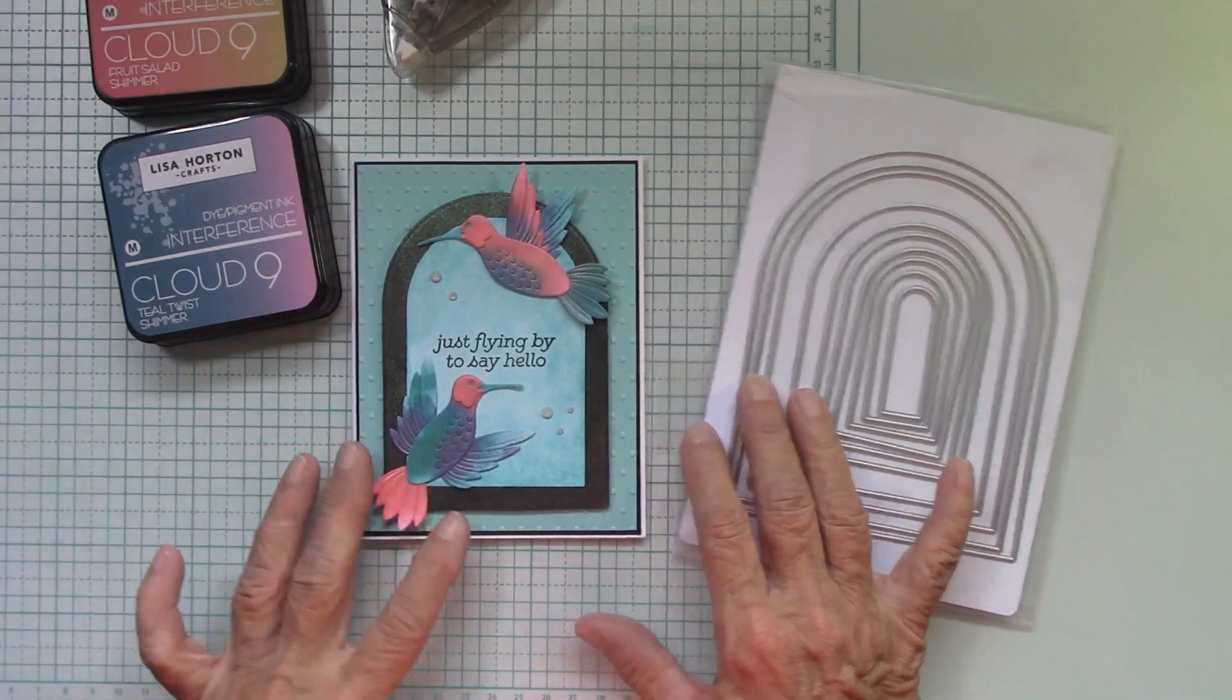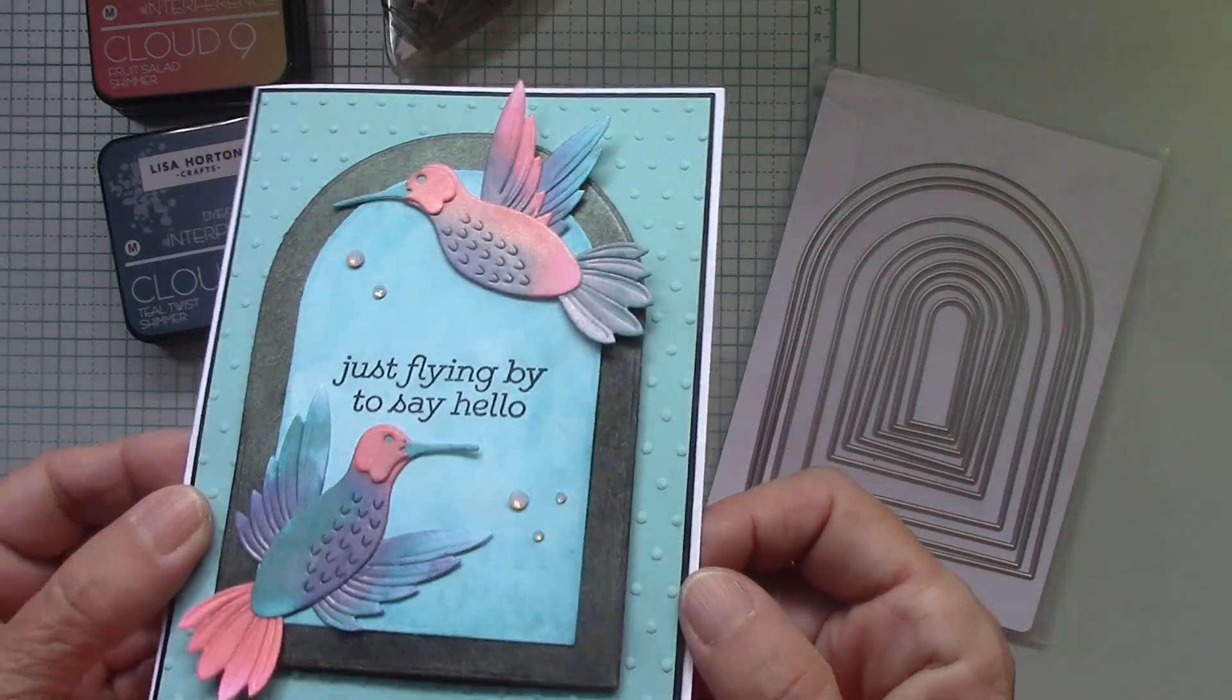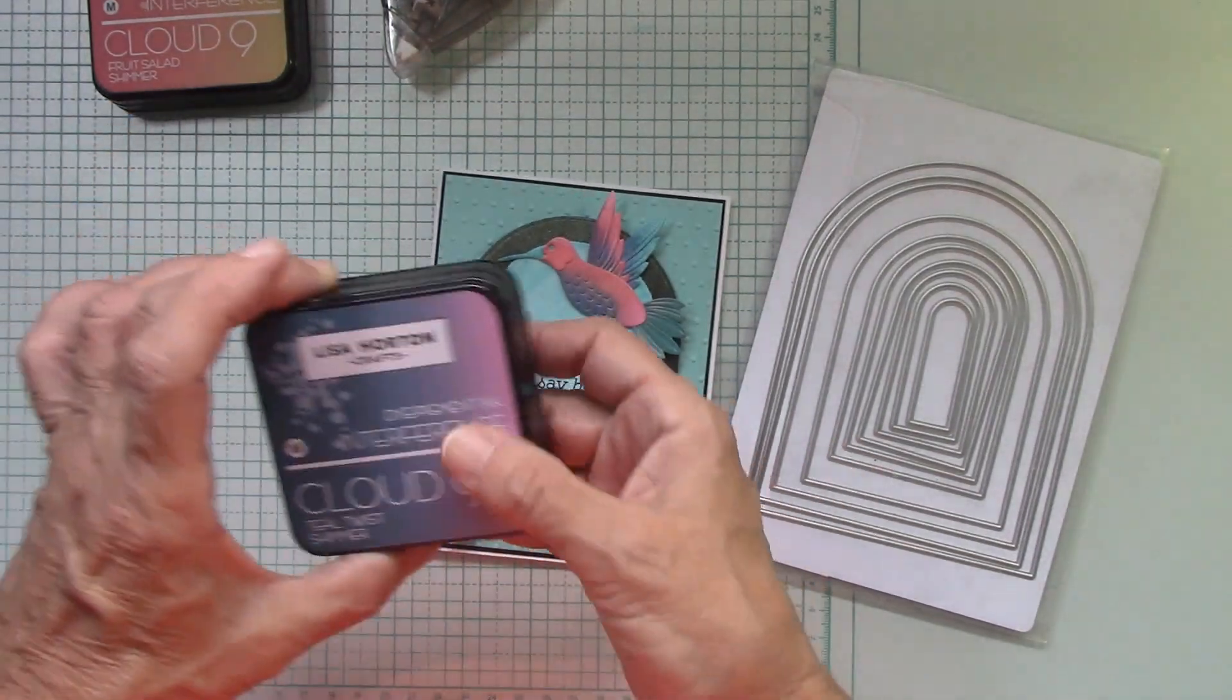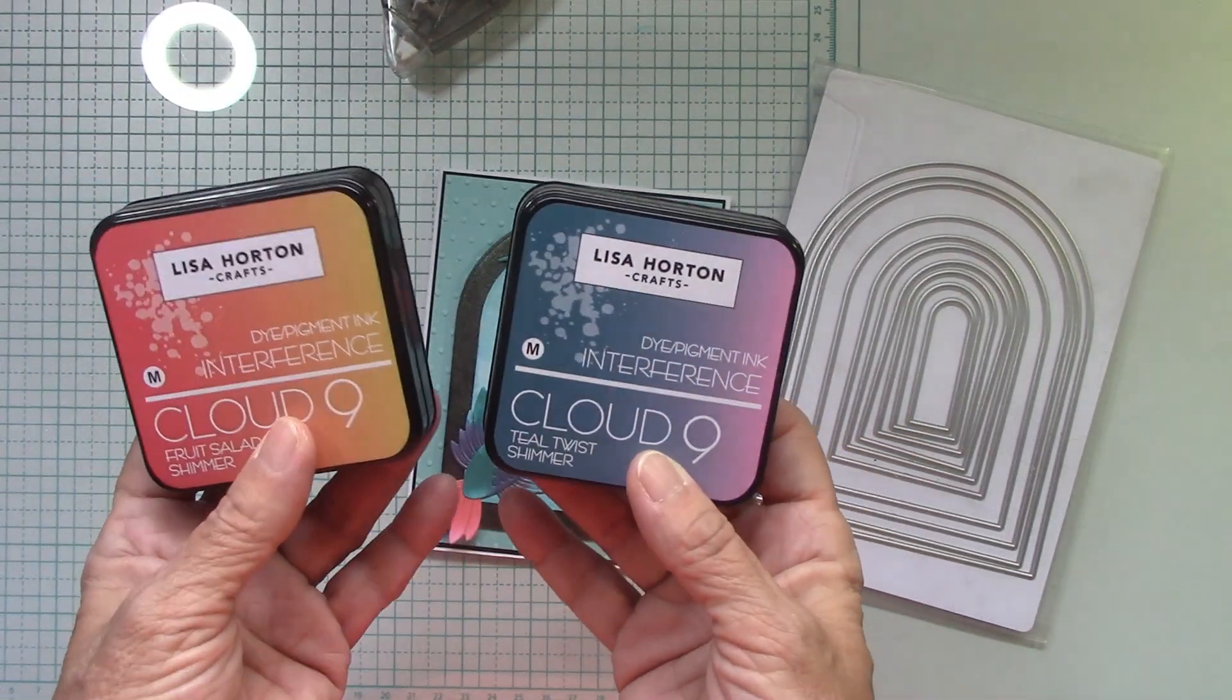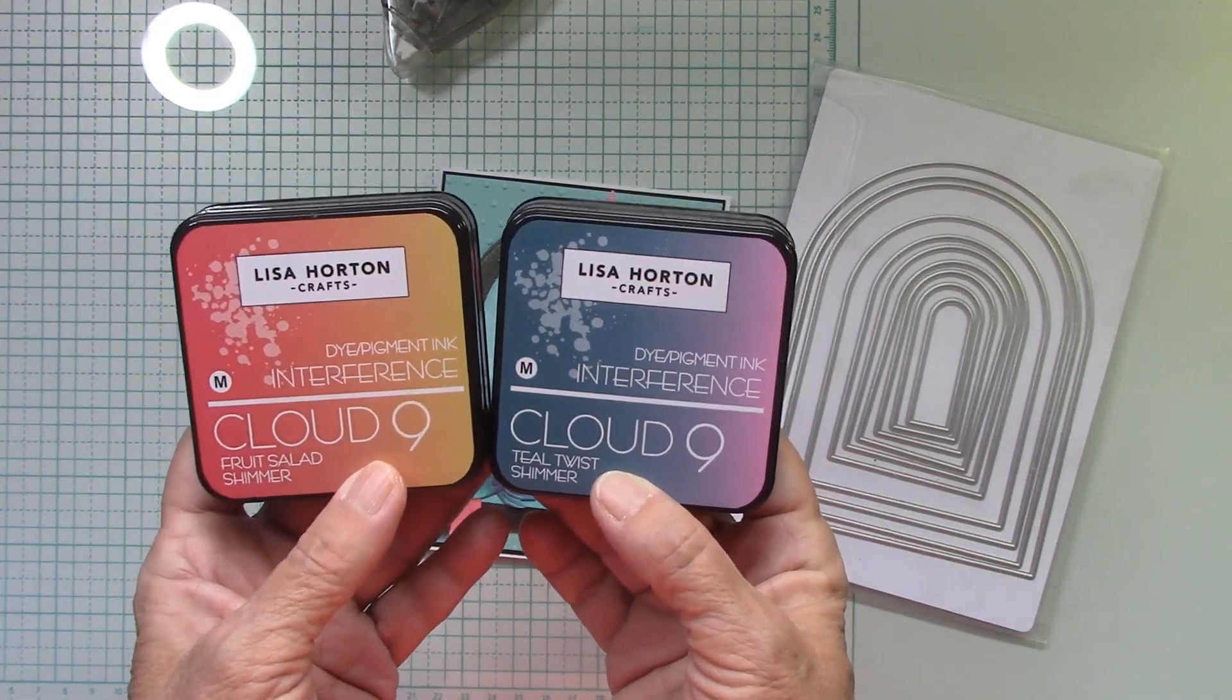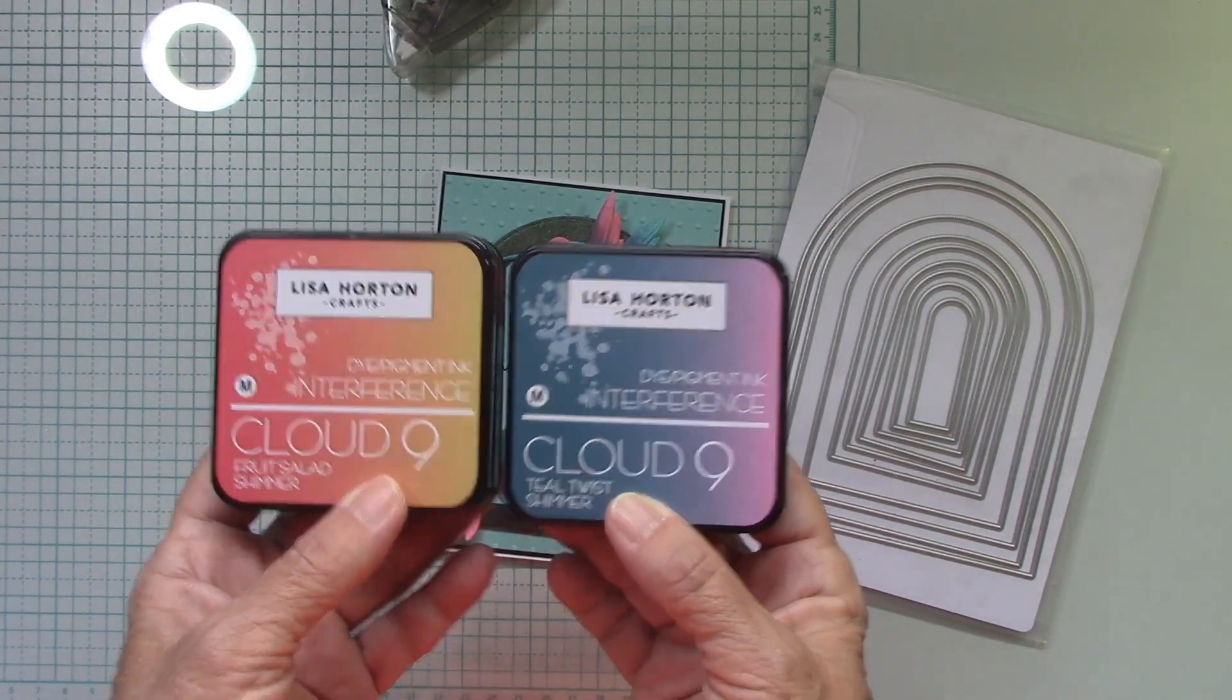So we're going to do that together. I made these beautiful, absolutely gorgeous, shimmery hummingbirds using my, I just have ordered two inks here of the Lisa Horton craft, the cloud nine interference ink. I just ordered these two colors and I'll tell you out of two colors,